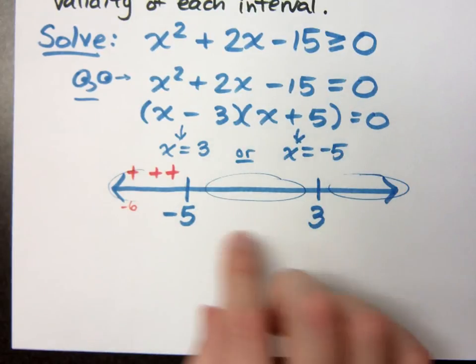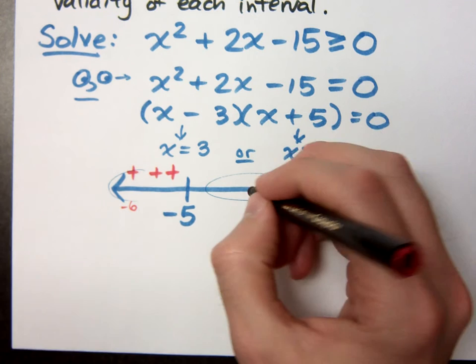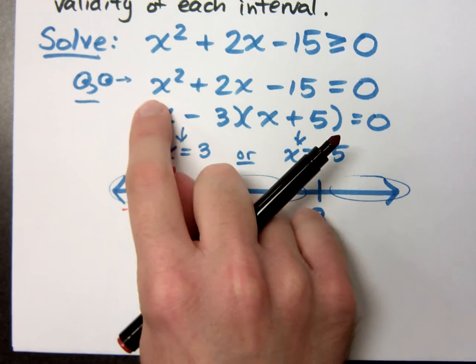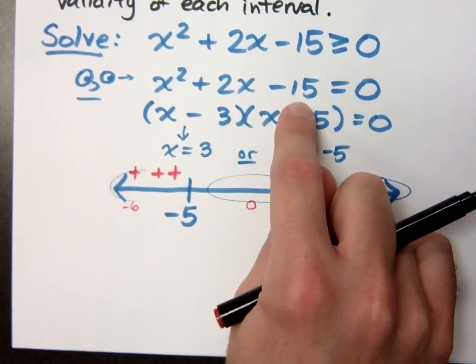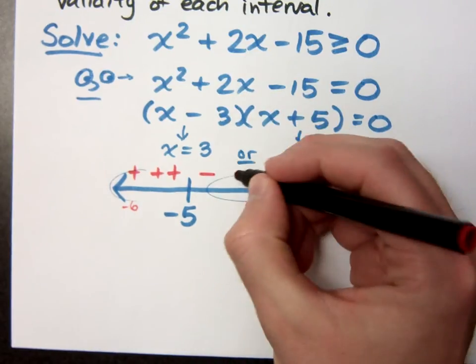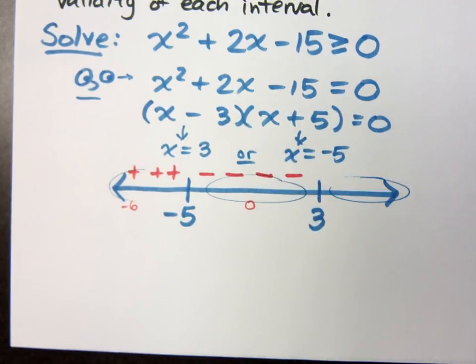Let's see what happens if I check something between negative 5 and 3. The easiest guy to check is to check 0. If I plug in 0, that's super easy. 0 plus 0 minus 15. That gives me a negative number, so I know everything in between here will be negative. If you don't believe me, pick anything in between negative 5 and 3, plug it in, and you're going to get something that's negative.